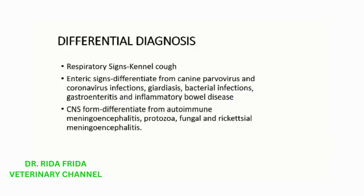The differentials for the disease include kennel cough, which can mimic respiratory disease. In the enteric form, differentiate the virus from canine parvovirus, coronavirus infections, GRDSS, bacterial infections, gastroenteritis, and inflammatory bowel disease. In the nervous form, differentiate the disease from autoimmune meningoencephalitis, protozoal, fungal, and rickettsial meningoencephalitis.